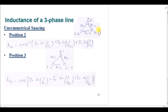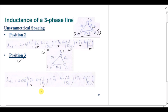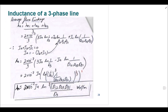When conductor a moves to position two, the distances change. For Ia, the denominator remains ra'. For Ib, since a is at position two and b at position three, the distance is d23. For Ic, the distance between a and c is d12. For position three: ra' remains for Ia, d31 is used for Ib (distance between b and a), and d23 is used for Ic.